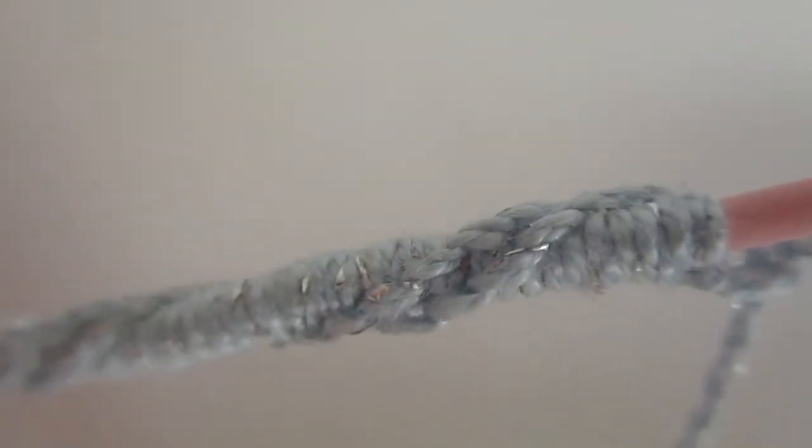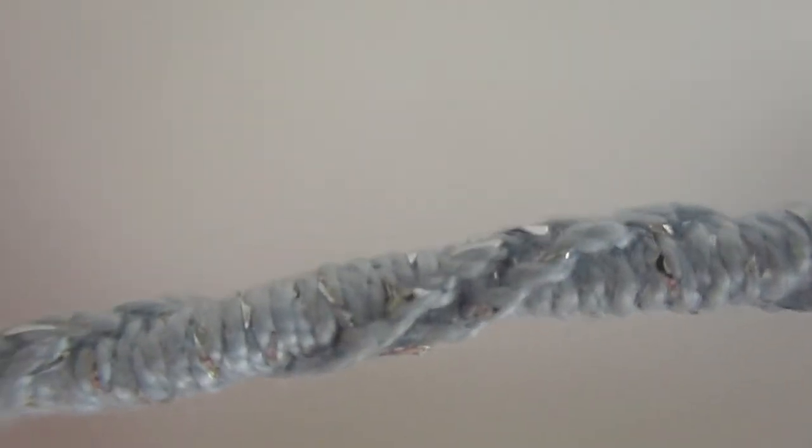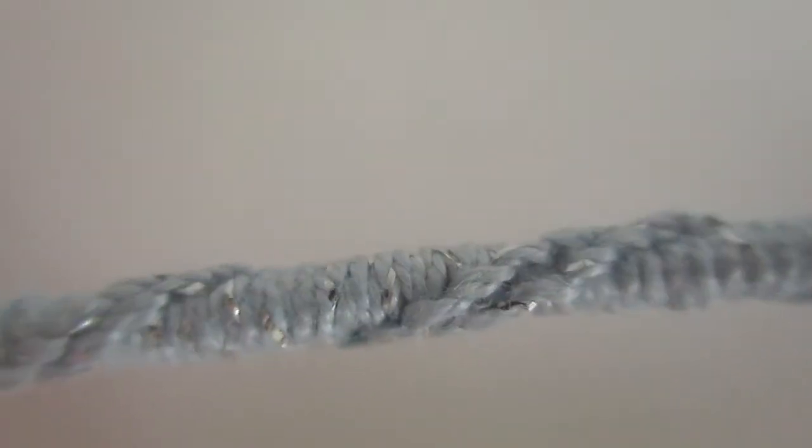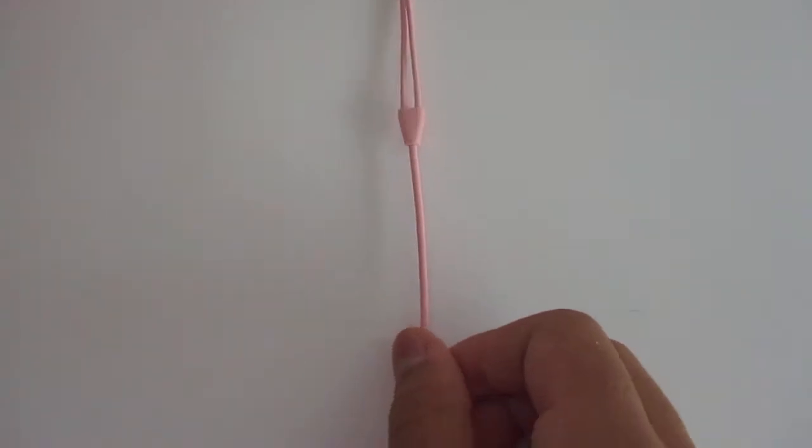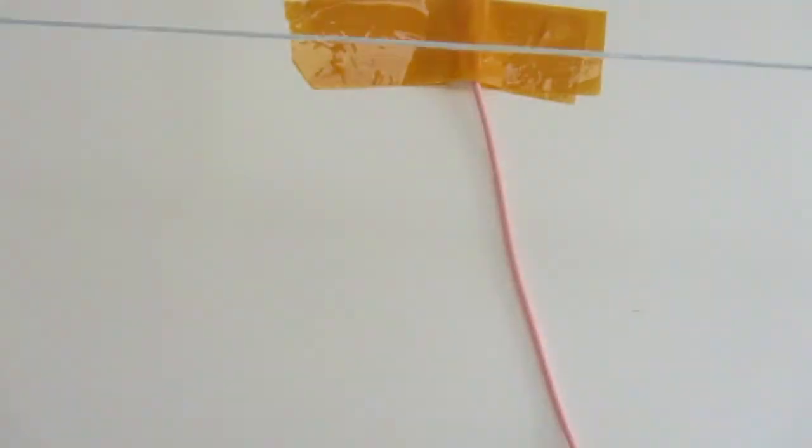Double Spiral. This one looks just like the first, except it has two lines wrapping around the cord instead of one. Starting this wrap is the same as the first, except make sure that the two strings are the same length when you tie them.